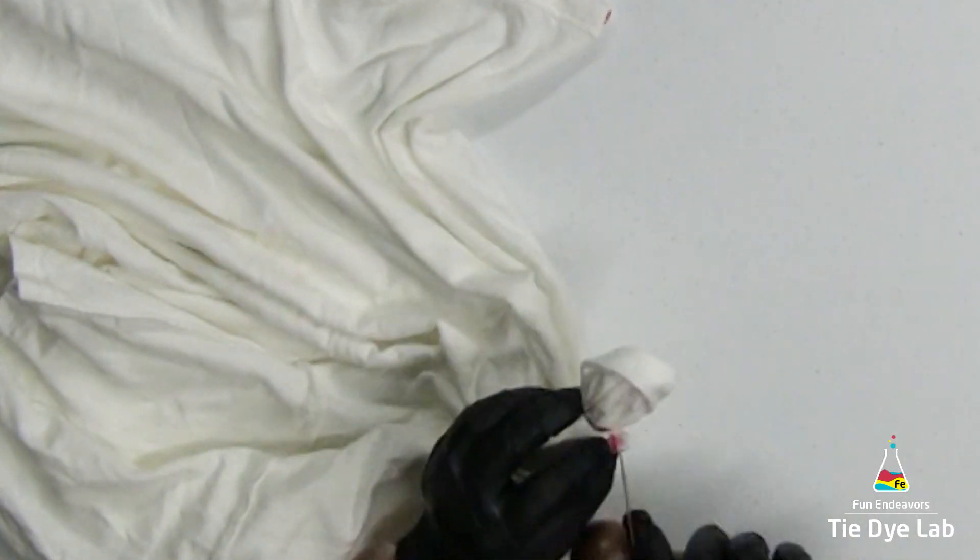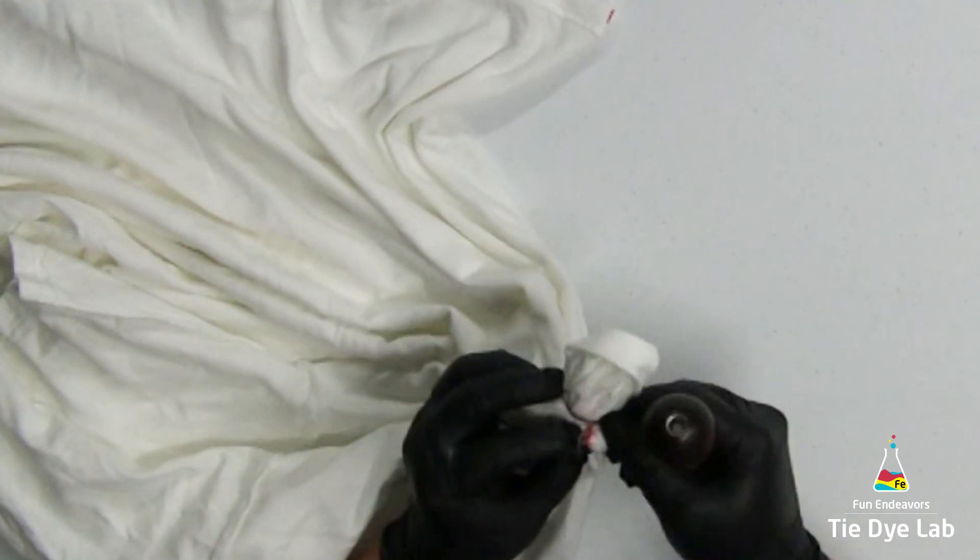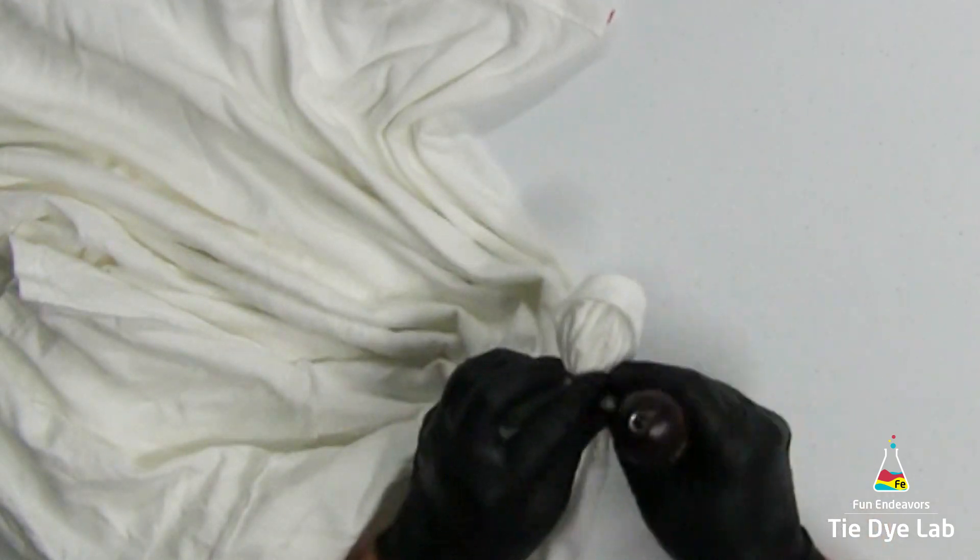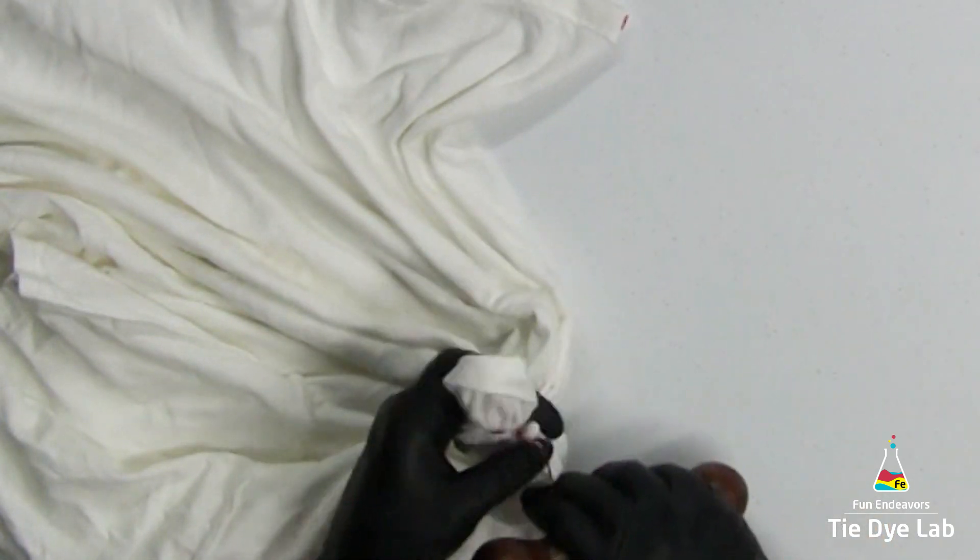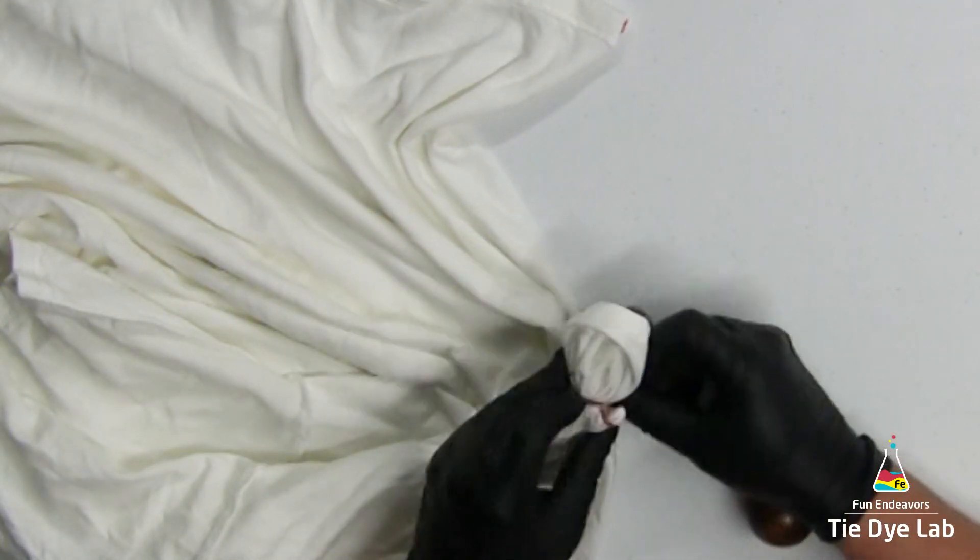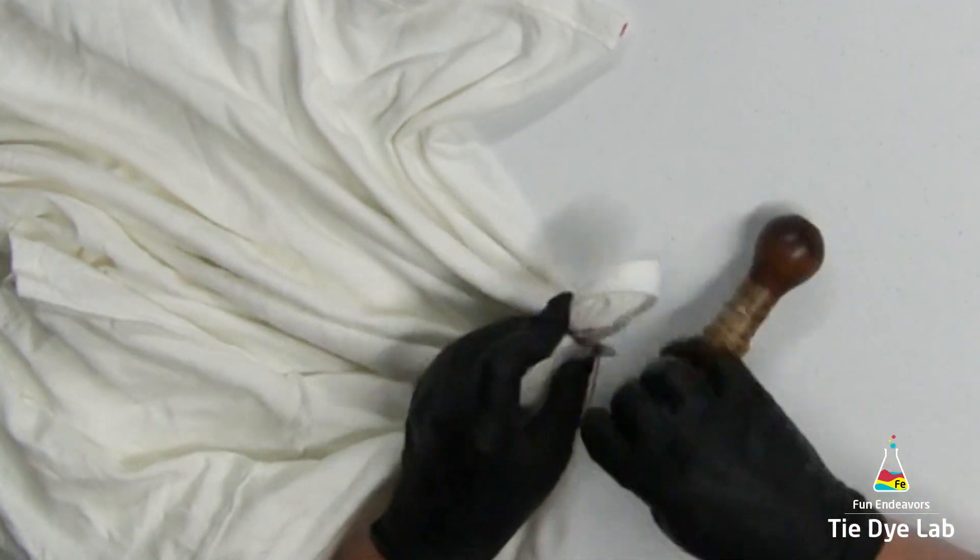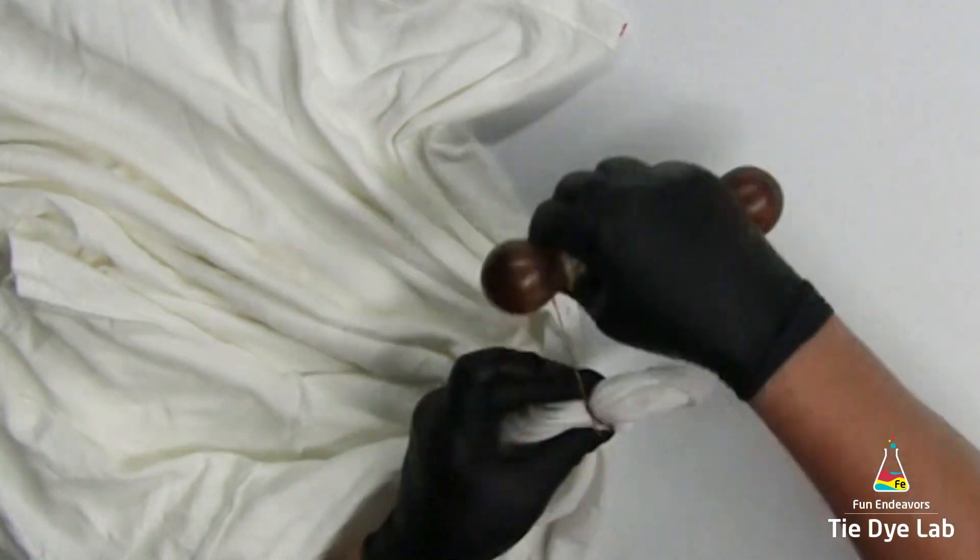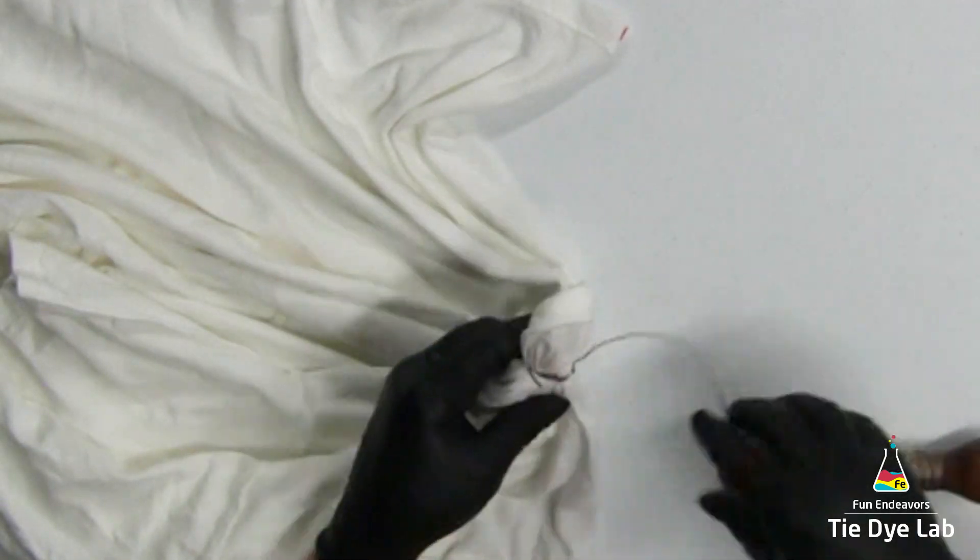I went ahead and left my sinew attached to the pumpkin area and I'm going to go ahead and do a couple small wraps around this stem. Then a couple more around the pumpkin just to kind of stabilize and hold everything in place.